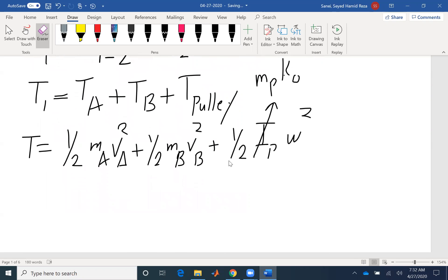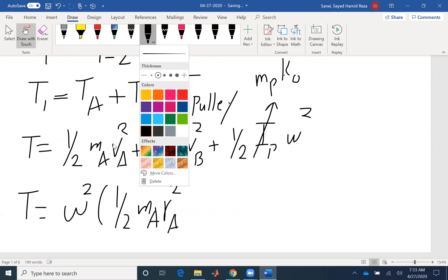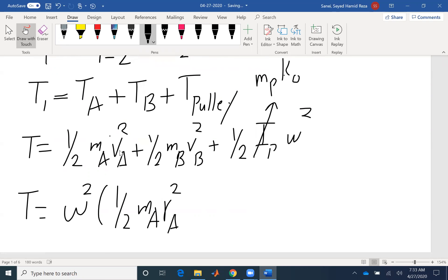So if I expand it and I factor omega squared for each, I have half MA RA squared. So VA would be R omega. So that would be RA squared omega squared. And I factor omega squared. So here, the same thing for MB, RB, and same thing for here, MP, K naught squared. All of them omega squared. I could factor half.